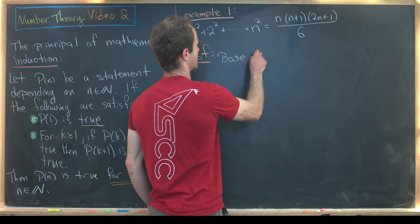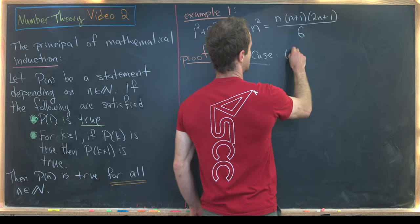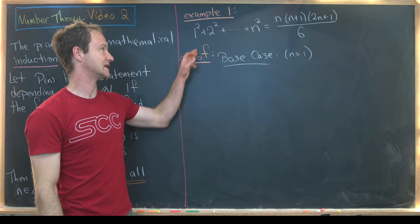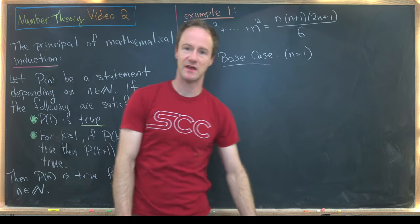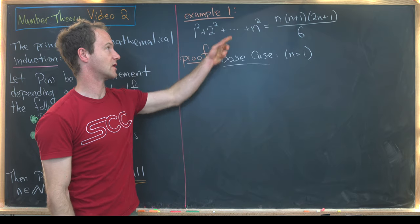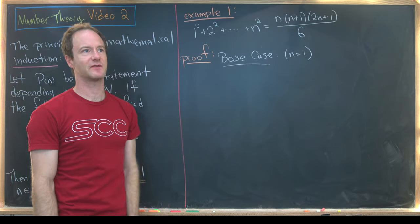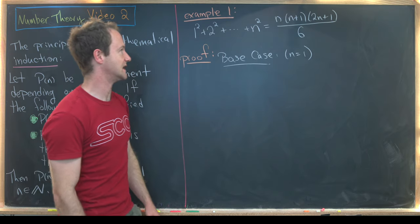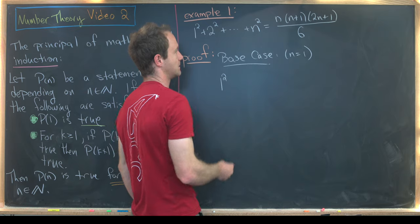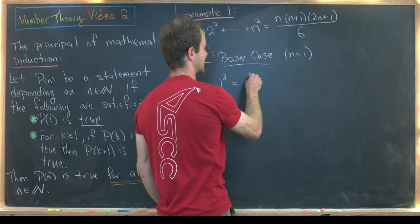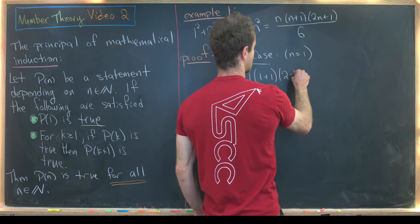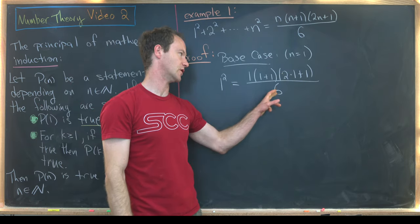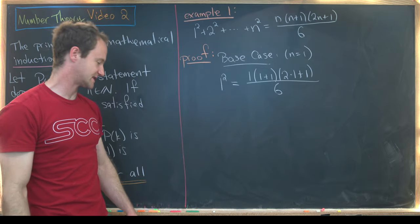Let's do this by induction. Our base case will be n equals 1. The statement P of n reads: 1 squared plus 2 squared all the way up to n squared equals n times n plus 1 times 2n plus 1 over 6. For the base case, the left-hand side is just 1 squared. Notice that 1 squared equals 1 times (1 plus 1) times (2 times 1 plus 1) all over 6, which is 1 times 2 times 3 over 6, which is just 1. So the base case is satisfied.